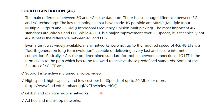In the fourth generation, the main difference lies in the data rate, and there is a huge difference between 3G and 4G technology. The key technologies that made 4G possible are MIMO — multiple input, multiple output — and orthogonal frequency division multiplexing. The most important 4G standards were WiMAX and LTE, with 4G LTE being a major improvement over 3G speeds.